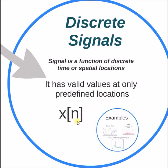For example, discrete signals in time are represented by x of n. A discrete signal looks something like this: it has no values between these locations. The value is 0 at these intervals, but it has values only at these predefined locations. This is x of n. This is discrete.